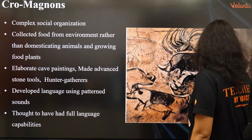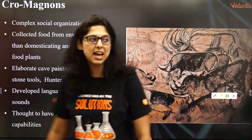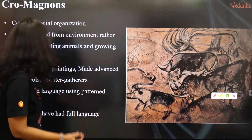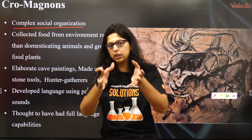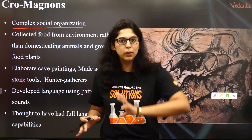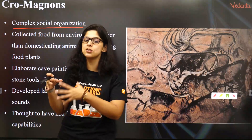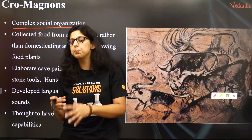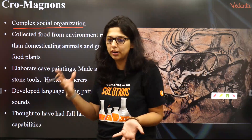Cro-Magnon man — see this is the kind of painting that they made. Cro-Magnons had a very complex social organization with a hierarchy. There would be a leader of the group, people who went out to forage for food, people who were guarding, some who domesticated animals, and others who looked after the settlements. It was a very complex social organization.